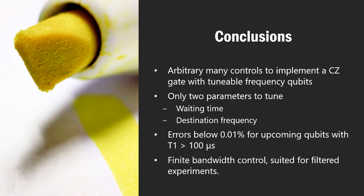So the conclusion of this work is that we have studied many different controls that can be computed semi-analytically and engineered very easily in the lab. These controls implement the control phase gate for a tunable frequency qubit. Once we have designed the pulse that we want to use for the ramp, there are only two experimental parameters to tune: the waiting time and the destination frequency, which allows us to correct many of the errors that happen in this process. Errors below 0.01% for upcoming qubits with over 100 microsecond lifetimes are already accessible with this technique.